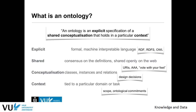Ontology engineering concerns building different types of ontologies — at different levels of how explicit and detailed they are. It is also about reuse: when you're building ontologies, you'll often reuse existing ontologies. This is best practice because there are already many ontologies out there, and for your specific use case you will probably be able to reuse one, two, or multiple existing ontologies.